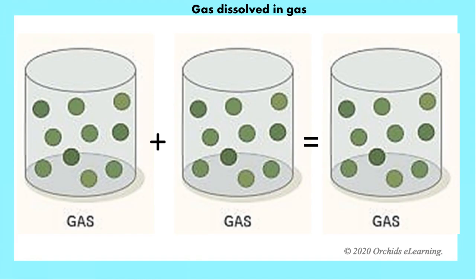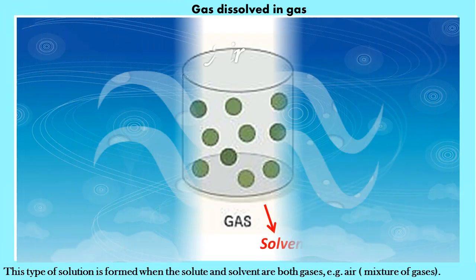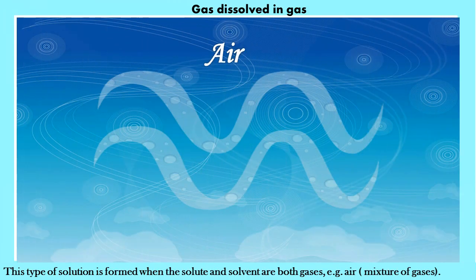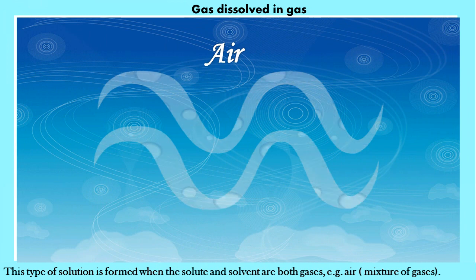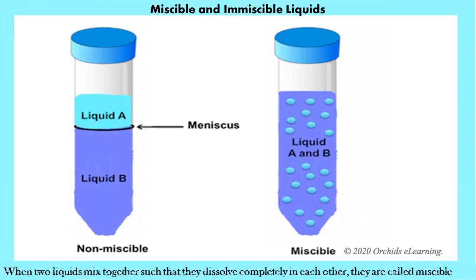Gas dissolved in gas: this type of solution is formed when the solute and solvent are both gases — for example, air, which is a mixture of gases. Miscible and immiscible liquids: when two liquids mix together such that they dissolve completely in each other, they are called miscible liquids.